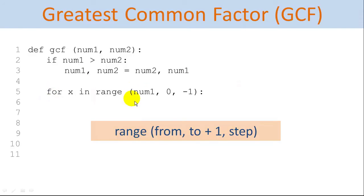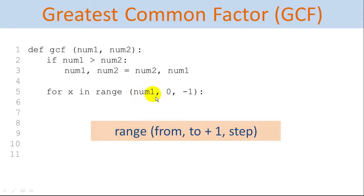We're going to use a loop ranging from num1, which is the smaller of the two, counting down to 1. Recall how the range function works: we count from num1 down to 0 plus 1, with an optional step — meaning increment — of negative one. So we're counting down.